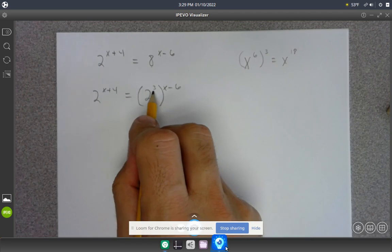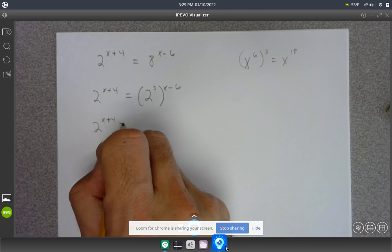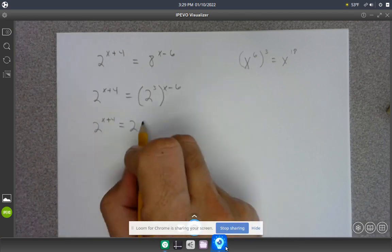So on the right-hand side, I'll expand that. 2 to the x plus 4, and that'll be 2 to the 3x minus 18.